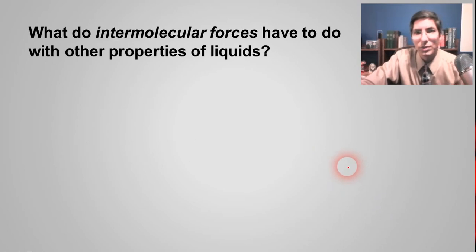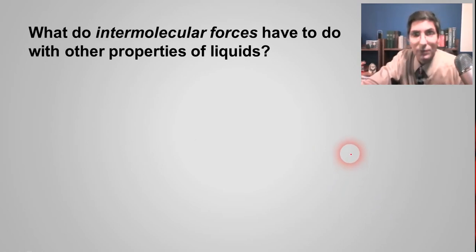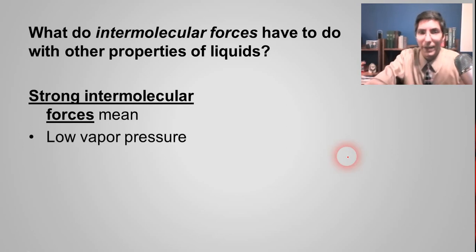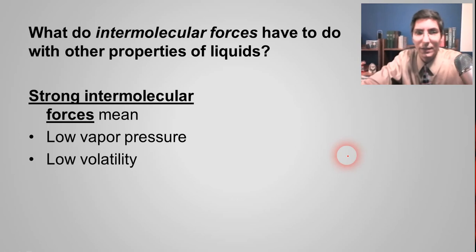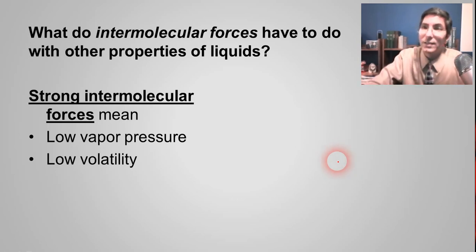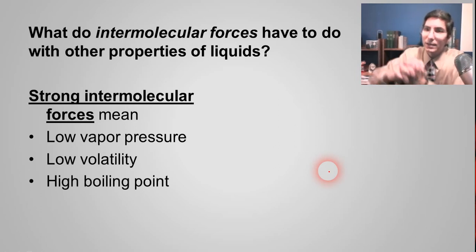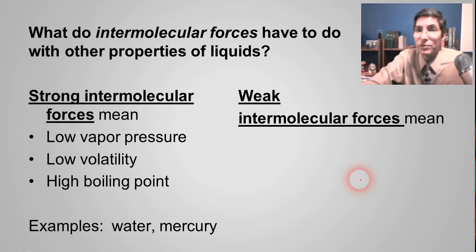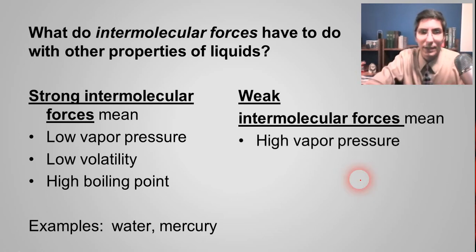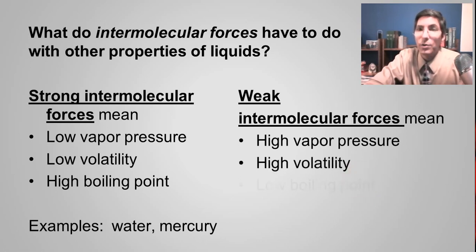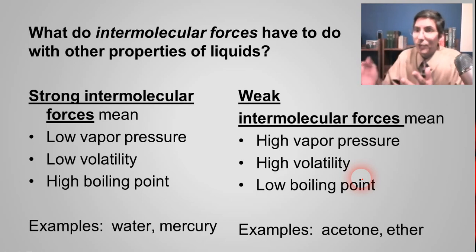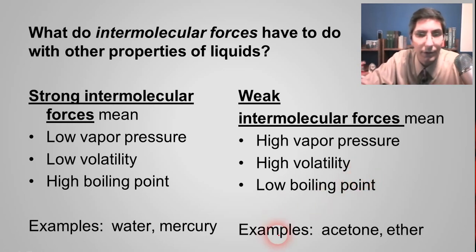What do intermolecular forces have to do with other properties of liquids? Strong intermolecular forces mean low vapor pressure — we already talked about that. It means the substance is not very volatile and has a low volatility. It's also going to have a high boiling point because you need a lot of heat to force those molecules to boil away. On the other hand, weak intermolecular forces give you high vapor pressure, high volatility, and a low boiling point, because the molecules don't stick together and it's easy to raise the vapor pressure up to atmospheric pressure.